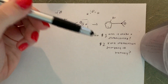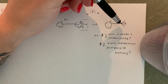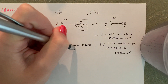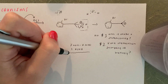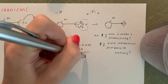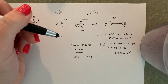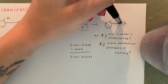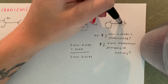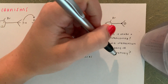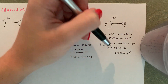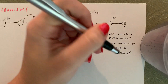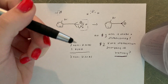Number two: is our carbocation secondary or tertiary? Secondary means the carbocation has two non-hydrogen substituents; tertiary means three non-hydrogen substituents. Look at this carbon — it has a methyl group, another methyl group, and all this other stuff — thus it is a tertiary carbocation. Tertiary carbocations are more stable than secondary ones.